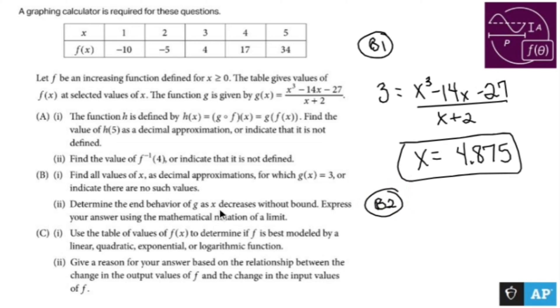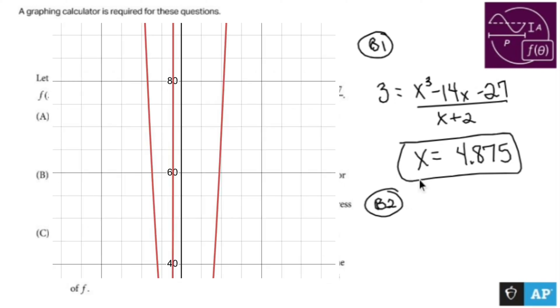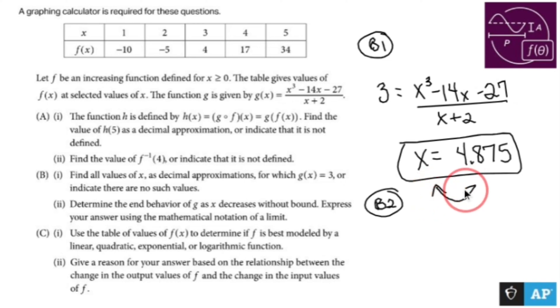Do B2. Determine the end behavior of g as x decreases without bound. Be careful. Express your answer using the mathematical notation of a limit. Let me quick throw up what the graph looks like again. Now what you can see is you have what looks like a parabola, which makes sense because if you were to do the x³ over x, that becomes quadratic-ish. We have a quadratic kind of with a positive leading coefficient. So we know it's going to have this type of behavior. Now, what the question is asking is determine the end behavior of g as x decreases without bound.